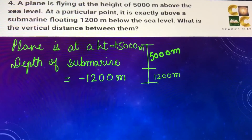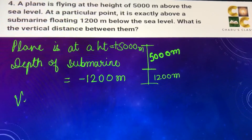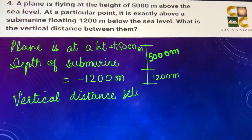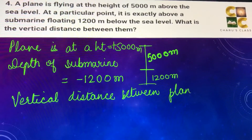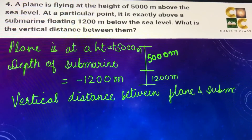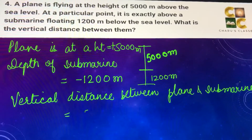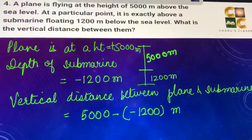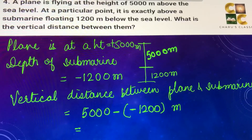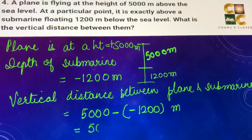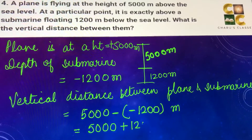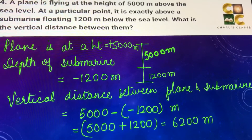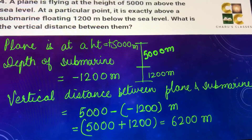We have to find the vertical distance between the plane and the submarine. The vertical distance equals 5000 minus minus 1200. The two negative signs — it's a product and two negatives give a positive — so this becomes 5000 plus 1200, which equals 6200 meters. That is the distance between the plane and the submarine.